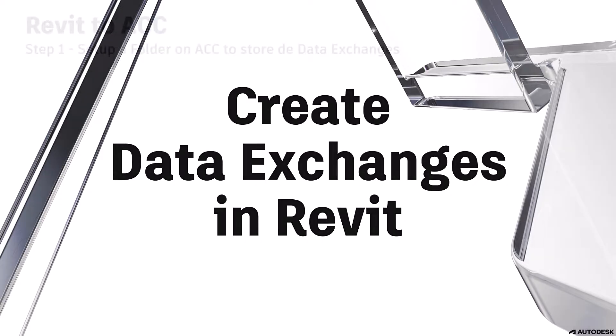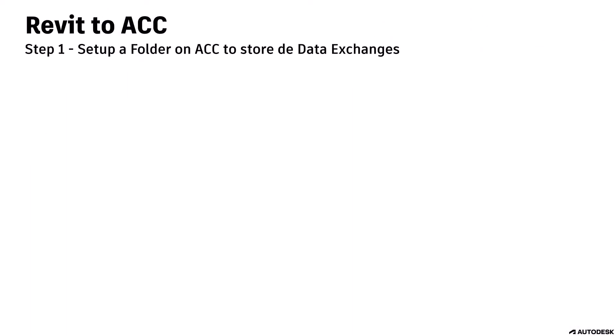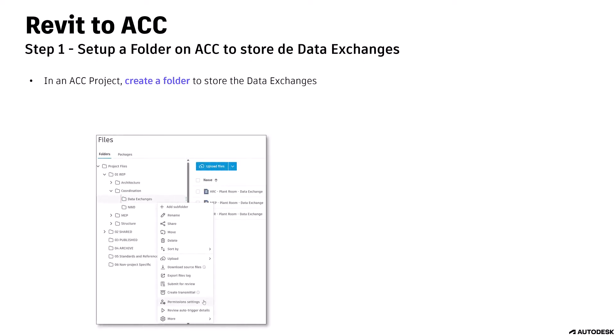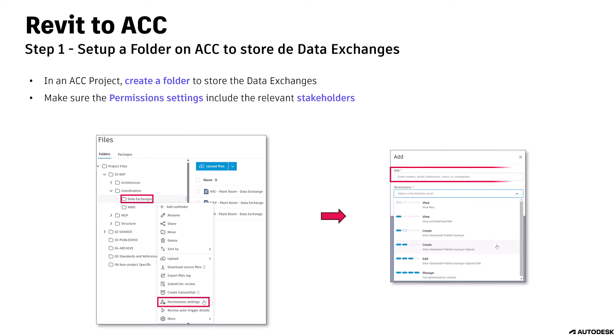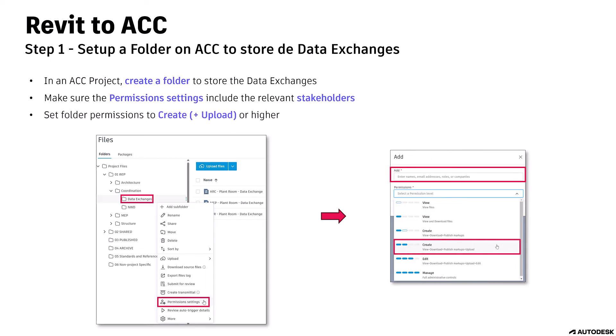If you are creating the data exchanges in Revit, this is how you do it. Step 1: set up a folder on ACC to store the data exchanges. In an ACC project, create a folder to store the data exchanges. Make sure the permission settings include the relevant stakeholders. Set folder permissions to Create, Upload, or higher.